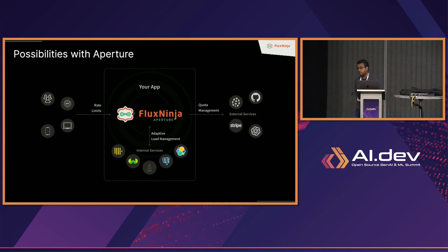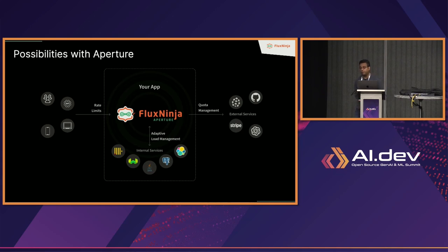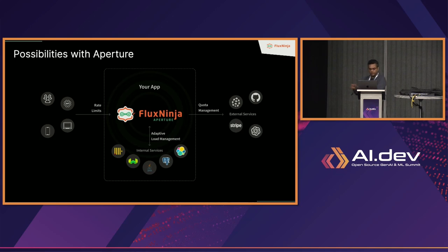They rate limit users by number of files reviewed per hour and commits per hour, managing load on the OpenAI side while also controlling costs. They also introduced caching in the same API call so they don't re-review a file if it hasn't changed much since the last review. All of this is enabled with the simple API of defining labels and wrapping workloads.